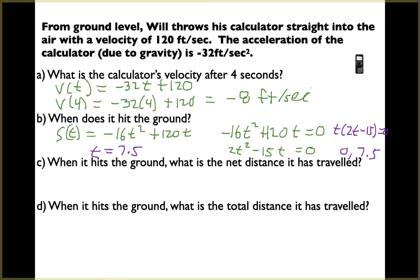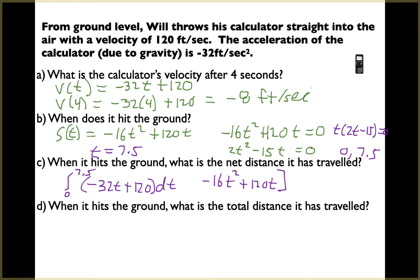When it hits the ground, what is the net distance traveled? We set up the integral from 0 to 7.5 of the velocity function, negative 32t plus 120 dt. Taking the anti-derivative gives negative 16t squared plus 120t, evaluated from 0 to 7.5. The result is zero feet — the calculator goes straight up and comes straight back down to where it was tossed from.